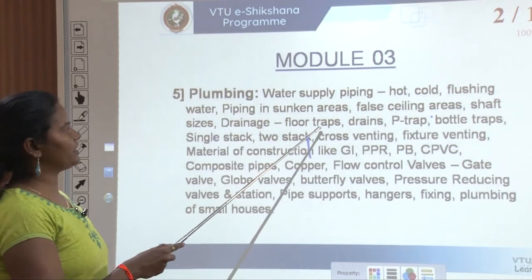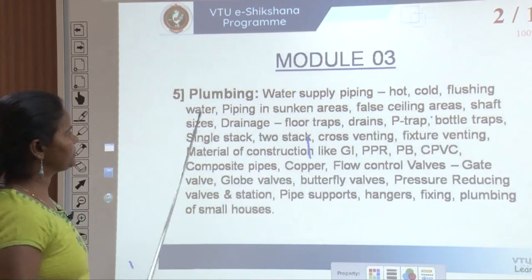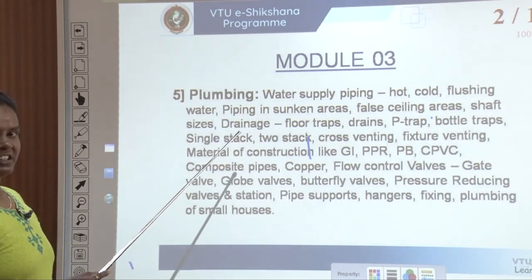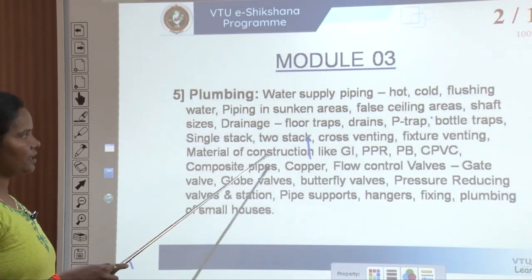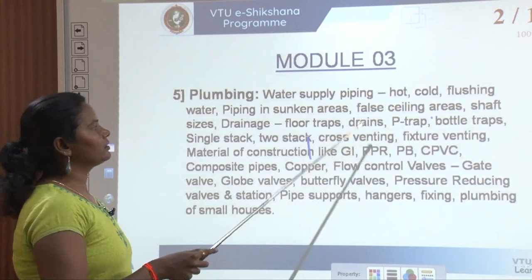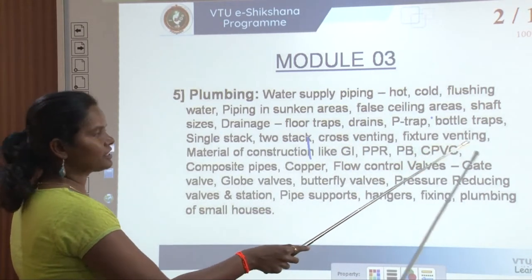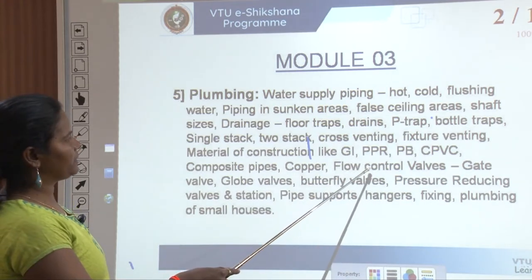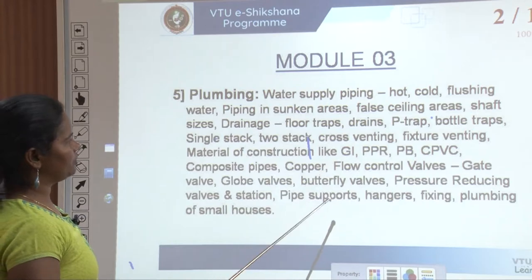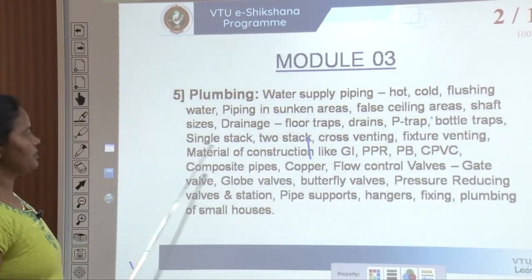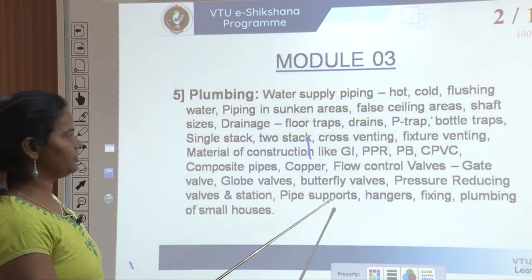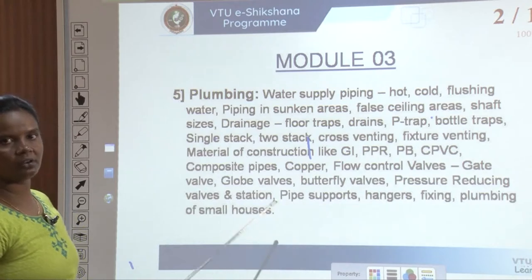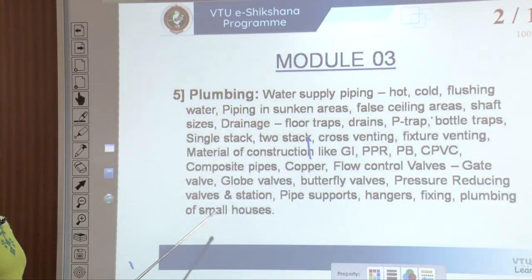In the drainage, we have floor traps, drains, P-trap, bottle traps, and single stack. We are going to cover drainage details with respect to the building — how the stacking happens: single stack, 2 stack, cross venting, and fixture venting. Then we will discuss materials of construction like GI (galvanized iron), PPR pipes, PB, CPVC, composite pipes, copper, and flow control valves — covering gate valve, globe valves, butterfly valves, pressure reducing valves, pipe supports, hangers, and fixing. This module ends with plumbing of small houses.